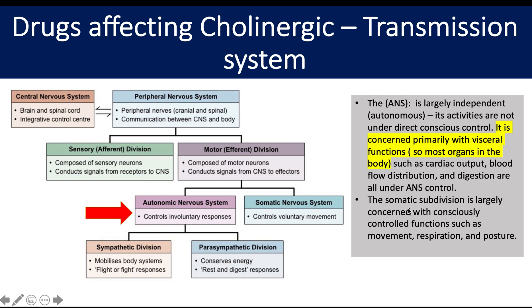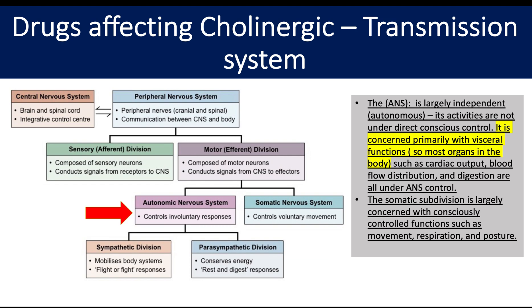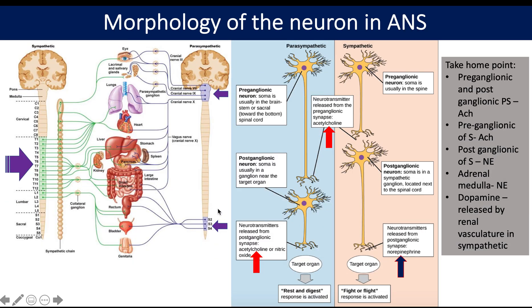Drugs affecting cholinergic transmission. As you know, the nervous system is split into the central nervous system and PNS. As pharmacologists, in this video we'll be looking at the autonomic nervous system and the sympathetic and parasympathetic divisions. Sympathetic is involved in fight and flight and parasympathetic in rest and digest. The ANS is concerned primarily with visceral function, so most organs of the body such as the heart, respiratory system, digestion, and GIT are not under direct brain control.